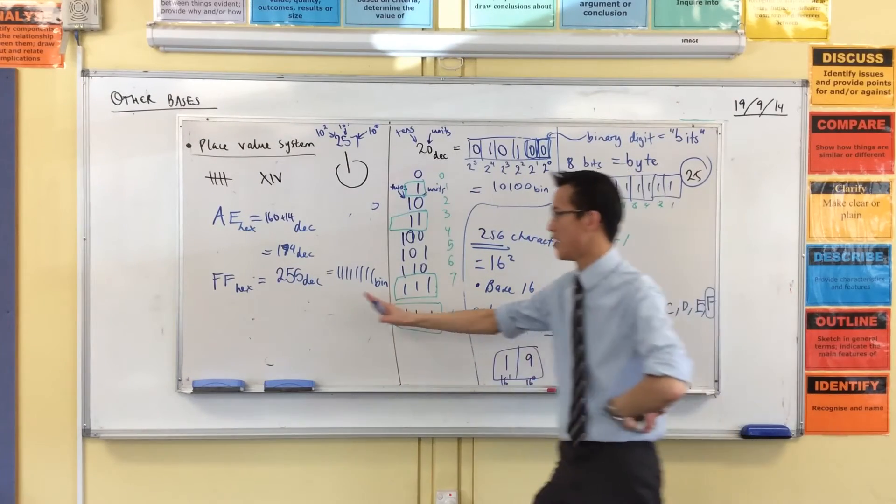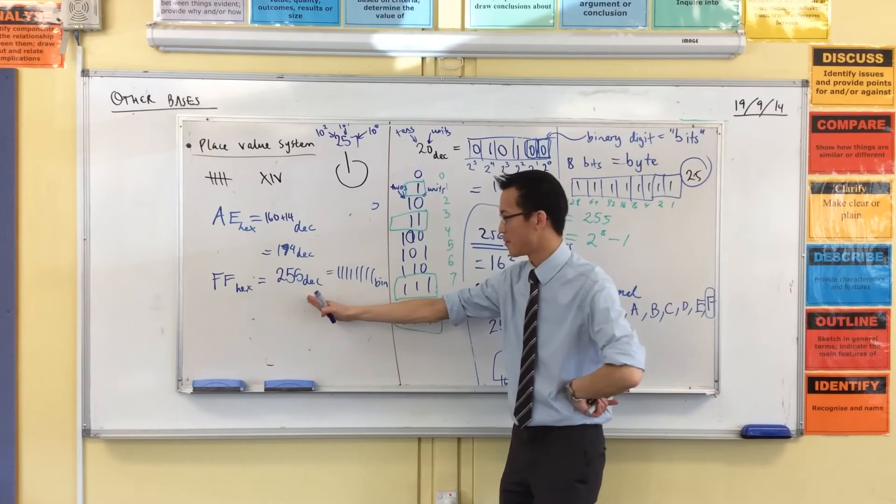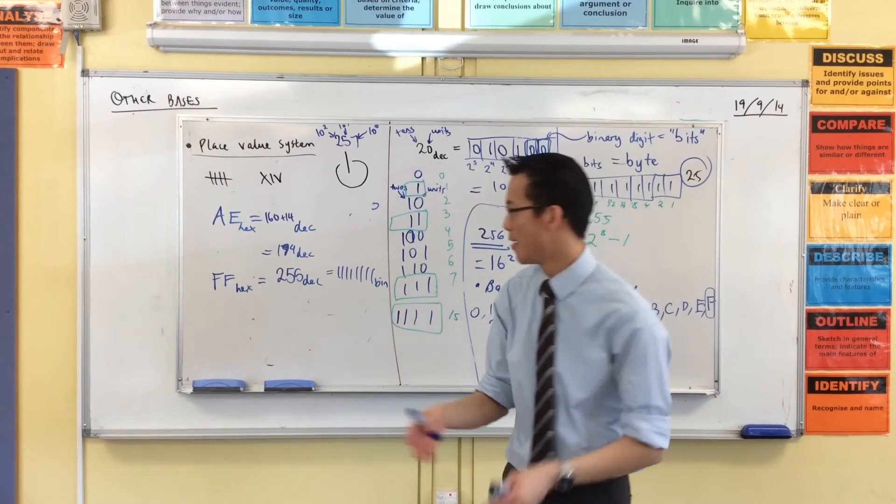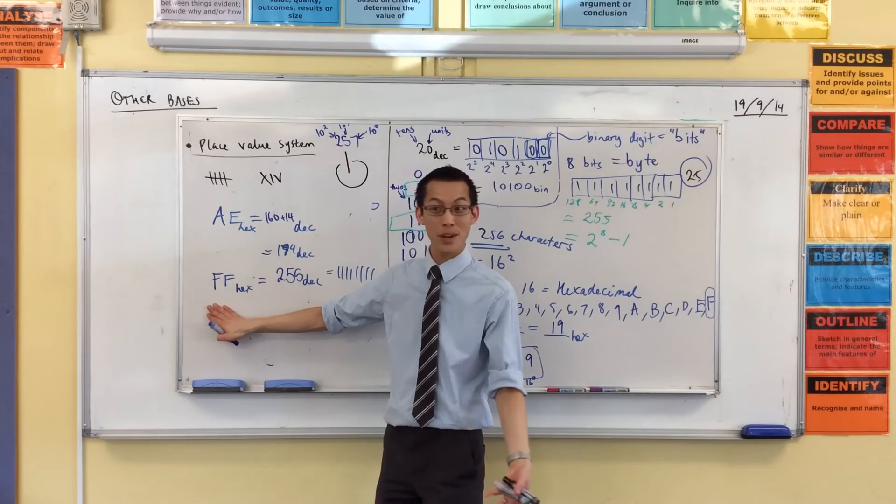So you can see how these larger bases, right, they make numbers more concise, but you have to know more characters to be able to read it, right?